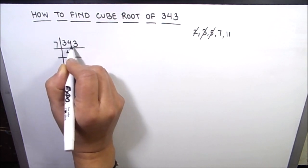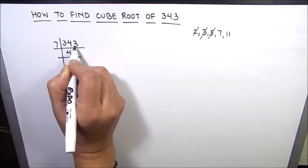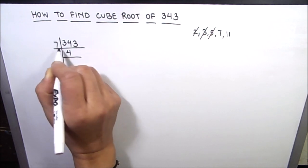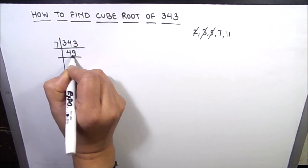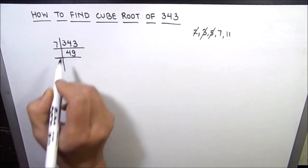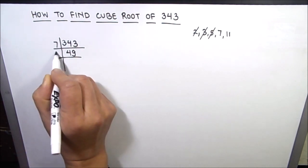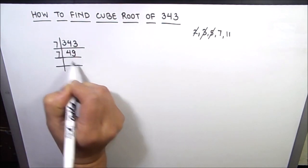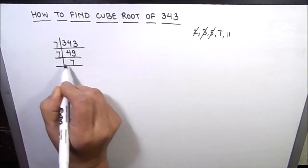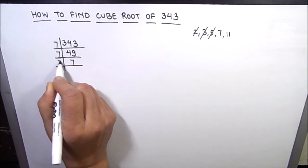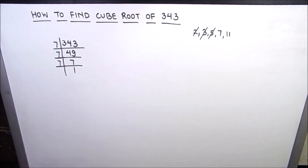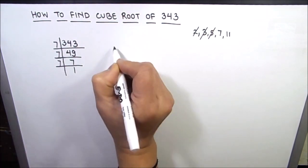7 times 4 is 28; 34 minus 28 is 6, so this becomes 63, and 7 times 9 is 63. So 343 ÷ 7 = 49. 49 is also divisible by 7 — 7 times 7 is 49. And 7 is a prime number, divisible by 7: 7 times 1 is 7.